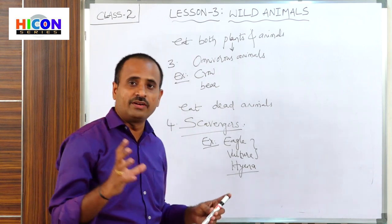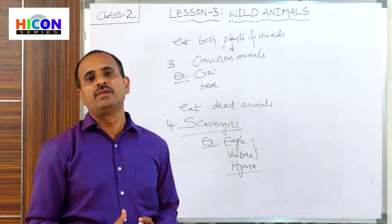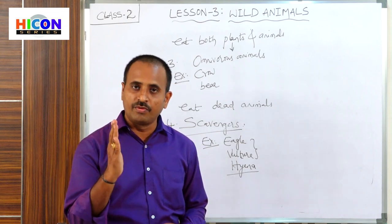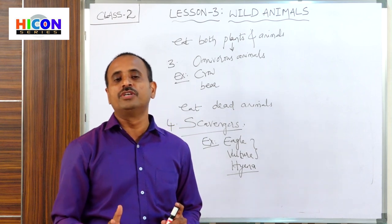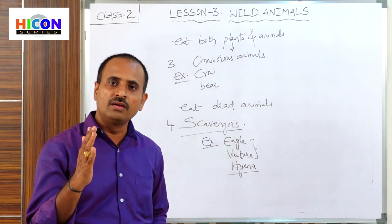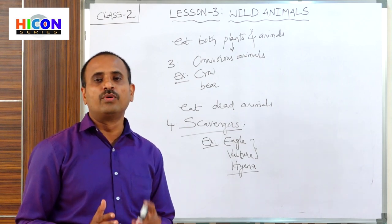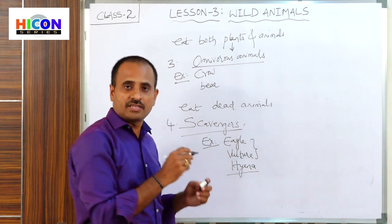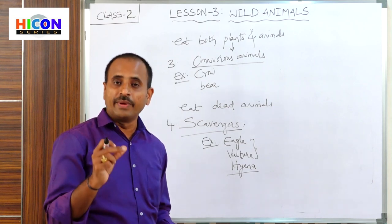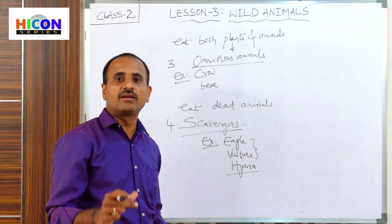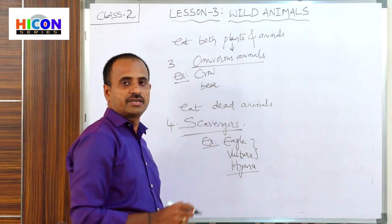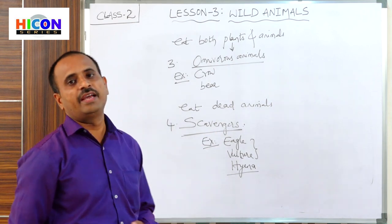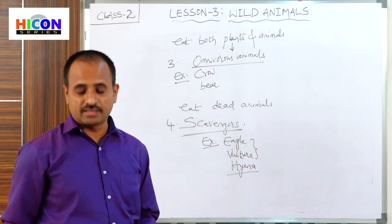So these are the four types of wild animals based on their food: herbivorous animals eat only plants and grass, carnivorous animals eat only flesh of other animals, omnivorous animals eat both plants and animals, and scavengers eat only the remains of dead bodies.